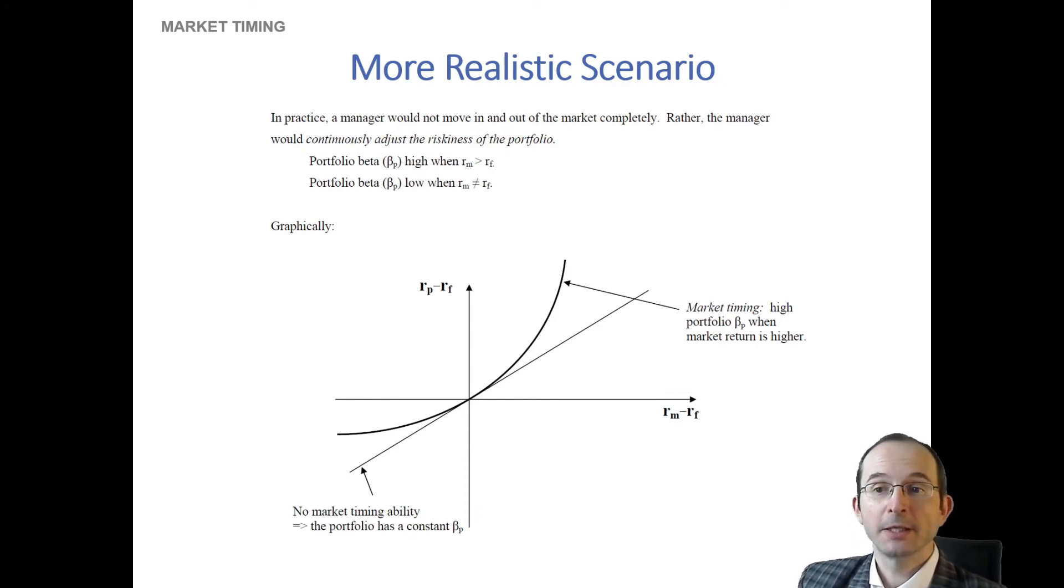And if you think about it, you could actually then test for this. If you look at the excess returns relative to the risk-free rate on the vertical axis and the excess returns to the market portfolio on the horizontal, you know that if you are able to successfully market time, your beta is effectively going to be nonlinear. It's going to be higher in good times when the market return is positive above the risk-free rate, and it's going to be lower in bad times when the market return is below the risk-free rate.